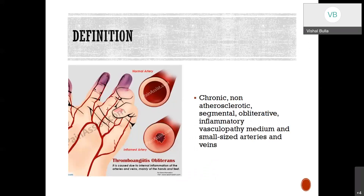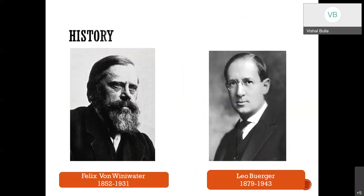By definition, Thromboangiitis Obliterans is a chronic segmental obliterative inflammatory vasculopathy of the medium and small size arteries and veins. Going back to history, in 1879, Felix von Winiwarter observed a 57-year-old man with prolonged foot pain and gangrene, which ultimately led to limb loss.